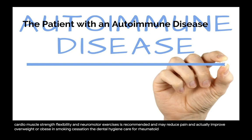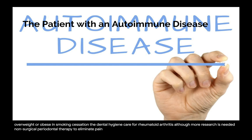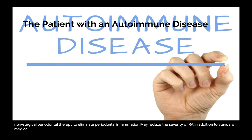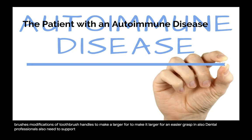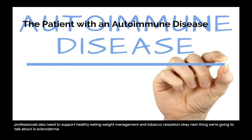Dental hygiene care for RA: although more research is needed, non-surgical periodontal therapy to eliminate periodontal inflammation may reduce the severity of RA in addition to standard medical care. Adaptations for decreased manual dexterity may include power toothbrushes, floss holders, or interdental brushes, and modifications of toothbrush handles to make them larger for easier grasp. Dental professionals also need to support healthy eating, weight management, and tobacco cessation.